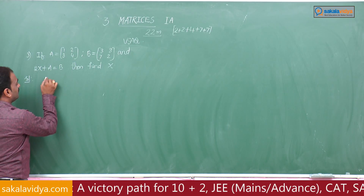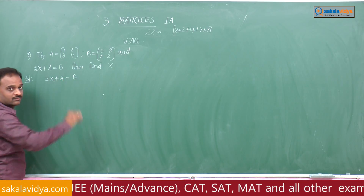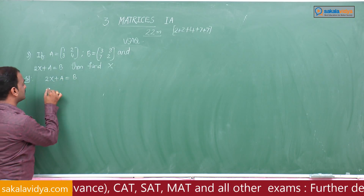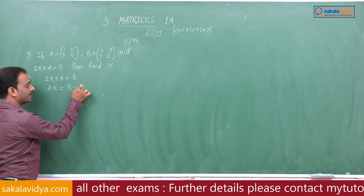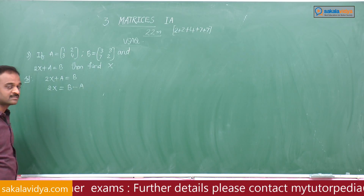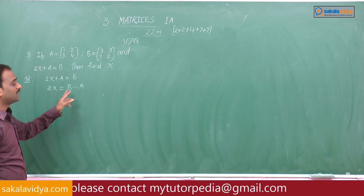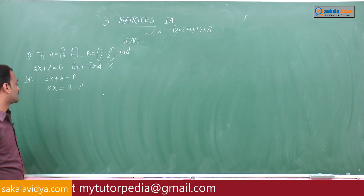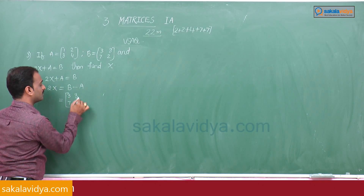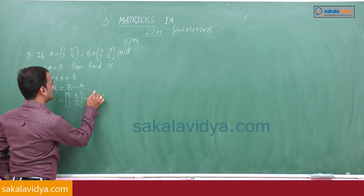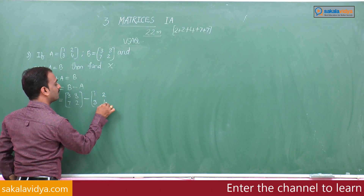Given condition: 2X plus A equals B. First, this can be written as 2X equals B minus A. Now we substitute the given two matrices. B equals [3, 8; 7, 2] minus A equals [1, 2; 3, 4].